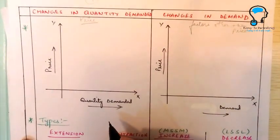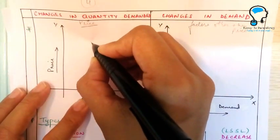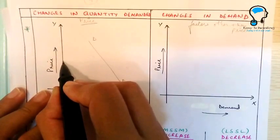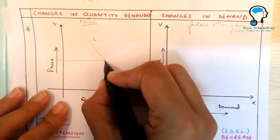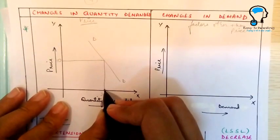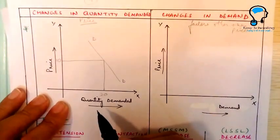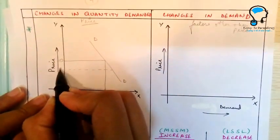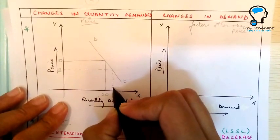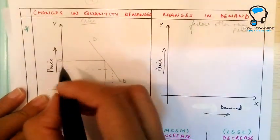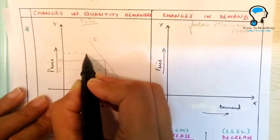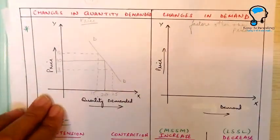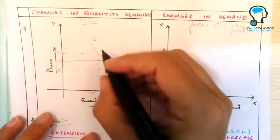In the case of changes in quantity demanded, suppose this is our demand curve DD — the original demand curve — and the price here is 10 and quantity demanded is 20. This is the original price and this is the original quantity demanded. Now, if the price changes from 10 to 8, the demand increases from 20 to 25, and when the price changes from 10 to 12 the demand changes from 20 to 15.